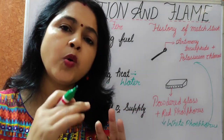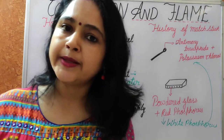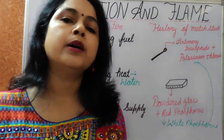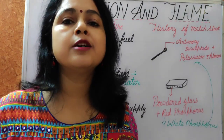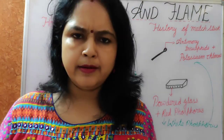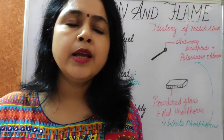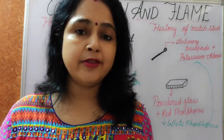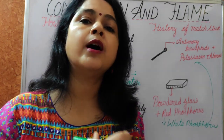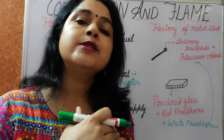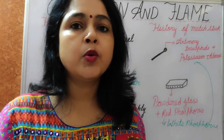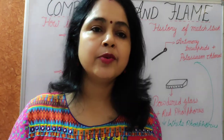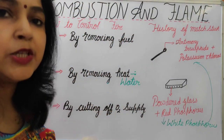If we remove any one of these three things, combustion will stop on its own. The first method is by removing fuel. When fire breaks out, the building itself acts as a fuel, so it is very difficult to remove the building entirely. But if possible, we should try to remove combustible substances from that building — like LPG cylinders, electrical switches should be turned off, and if wooden logs, charcoal, petrol, or kerosene oil are there, remove them if possible, without risking our life.